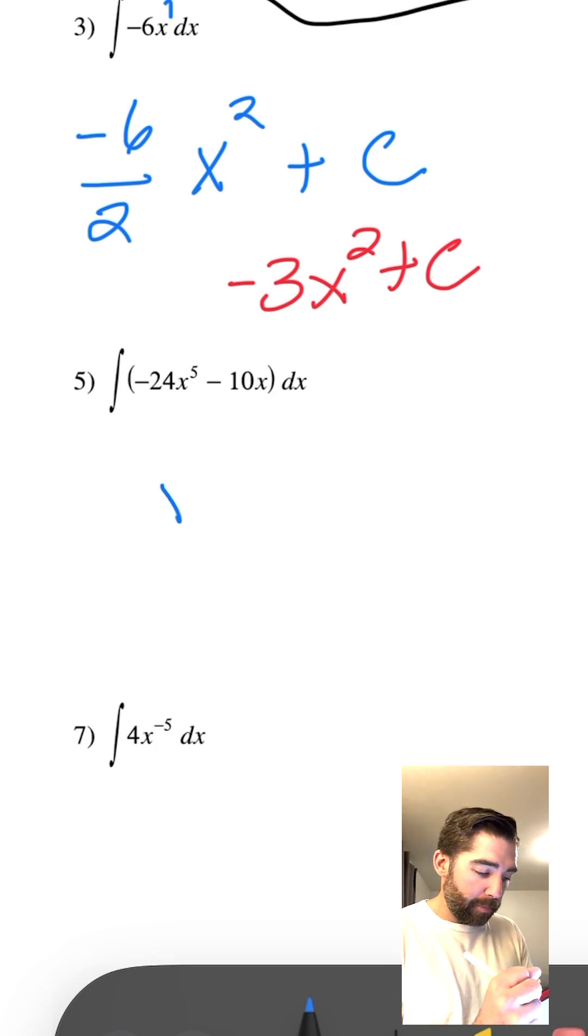x to the 5th, that's going to make it x to the 6th, which means we're going to divide by 6, bring down that 24, negative, minus x to the 1st power, that's the same thing.